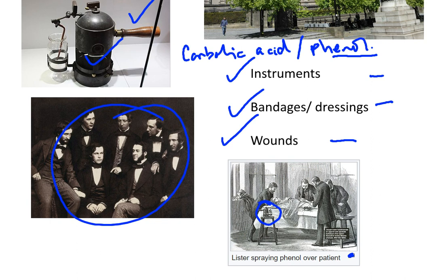The method was very successful. Lister's patients developed many fewer infections and recovered from their operations very quickly. But as tended to be the case in those days, his ideas were slow to be accepted, and it actually took many years — a couple of decades — before they were widely used. But Joseph Lister is still regarded as being the father of modern surgery for his methods in preventing infection in wounds, using antiseptics.